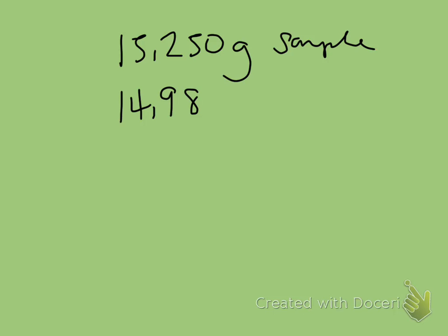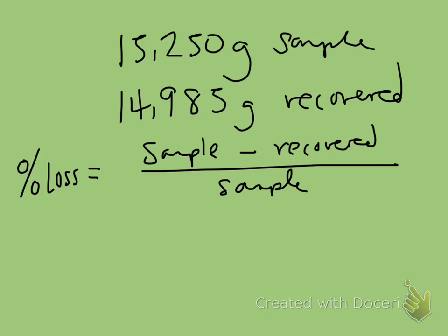If you had a 15.250 gram sample, that's how precise we can be with these balances, and you recovered 14.985 grams. So what's your percent loss? Your percent loss is going to equal your sample minus what you recovered divided by your sample, all multiplied by 100.